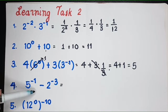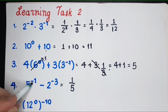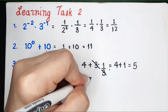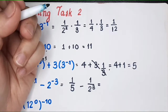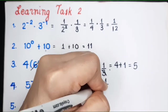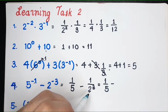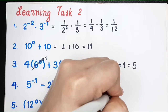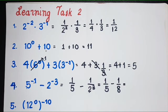For the next problem, we write everything without negative exponents. 5 raised to negative 1 becomes 1 over 5. Minus 2 to the negative 3, which becomes 1 over 2 raised to 3. Continuing, we have 1 over 5 minus 1 over 8, since 2 cubed is 2 times 2 times 2 which equals 8. Now we combine these fractions.